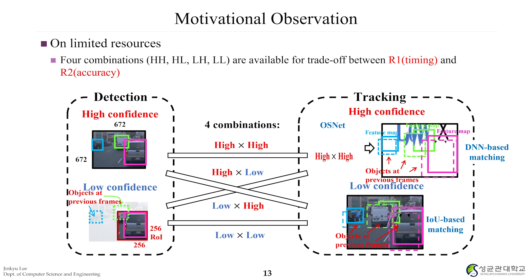In summary, we have four options: HH (high confidence detection, high confidence tracking), HL, LH, and LL. These four combinations are available as trade-offs between R1 and R2. If we choose HH, we maximize accuracy but it takes the longest time. If we choose LL, we minimize time but accuracy is the lowest. If we have enough time, choose HH; if suffering from limited time, choose LL.